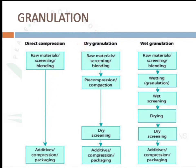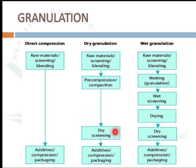In dry granulation, we mix the raw materials, active pharmaceutical ingredients, and additives, then screen and blend, and perform a pre-compression or compaction to prepare granules without adding water or any aqueous solvents — that is why it is called dry granulation. After pre-compression we get a solid mass, dry screen it using different sieves, then add additives, compress, and package.